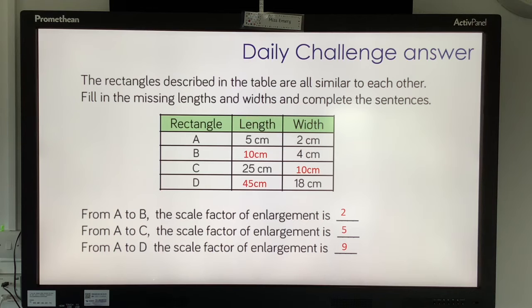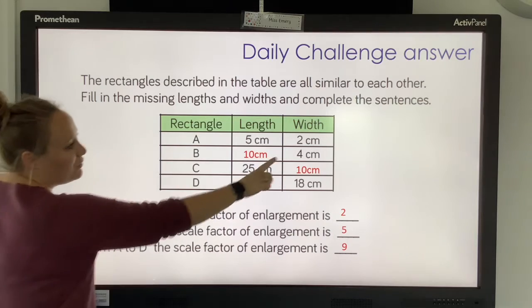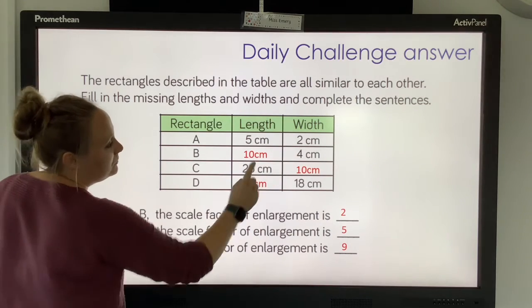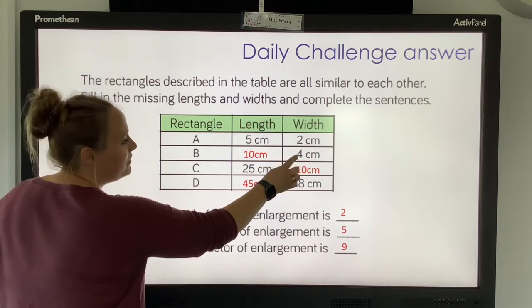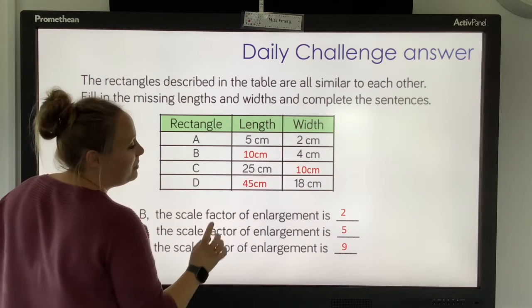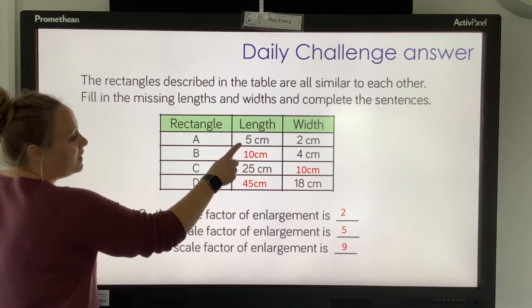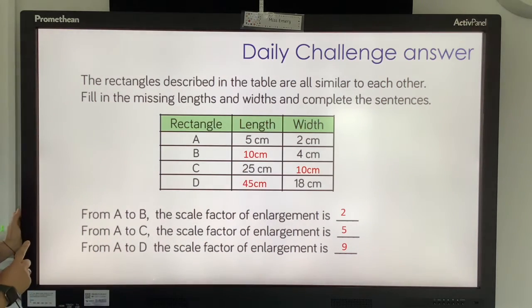So, hopefully you looked for relationships. And you can see here that from rectangle A to rectangle B, you've gone from a width of 2 centimetres to 4. And you know that 2 times 2 is 4. So you've multiplied by 2, so your scale factor of enlargement is 2. Then 5 times 2 is 10, so your missing number was 10 centimetres.